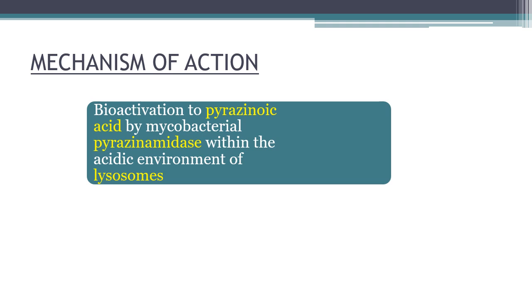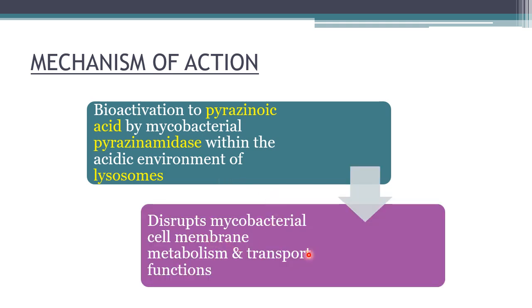Pyrazinamide is first activated by mycobacterial pyrazinamidase to pyrazinoic acid within the acidic environment of lysosomes. After activation, it disrupts mycobacterial cell membrane metabolism and transport functions, and it is bactericidal. It is active only against Mycobacterium tuberculosis. Resistance can develop due to impaired uptake of pyrazinamide or due to mutations in the pncA gene encoding the enzyme pyrazinamidase required for its activation.